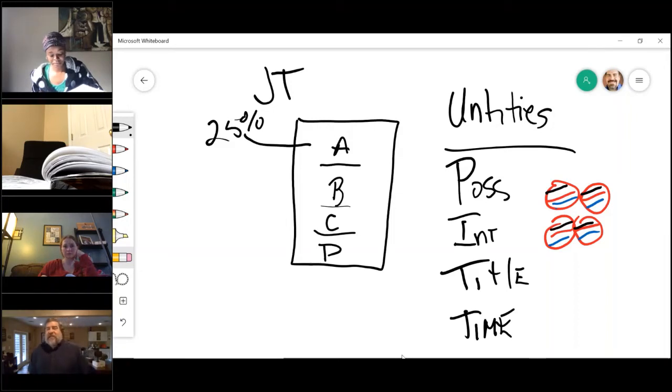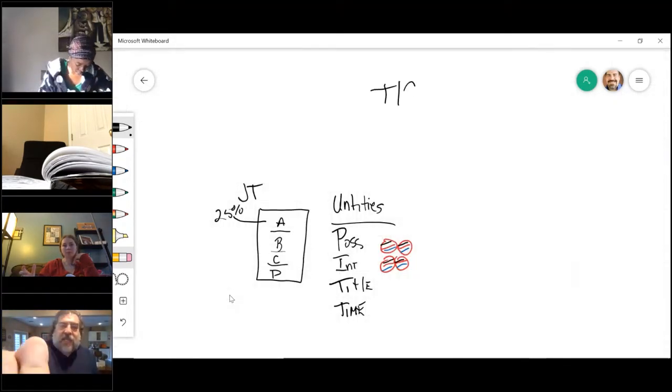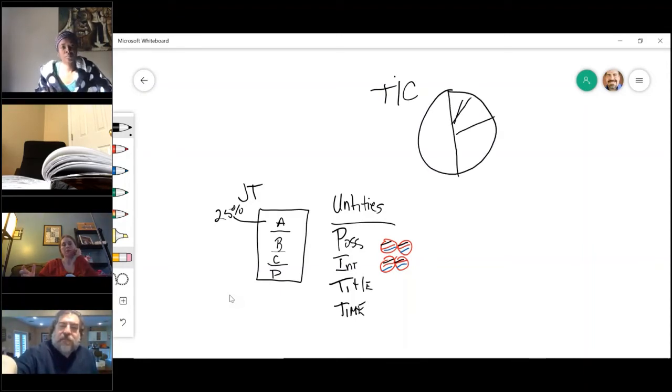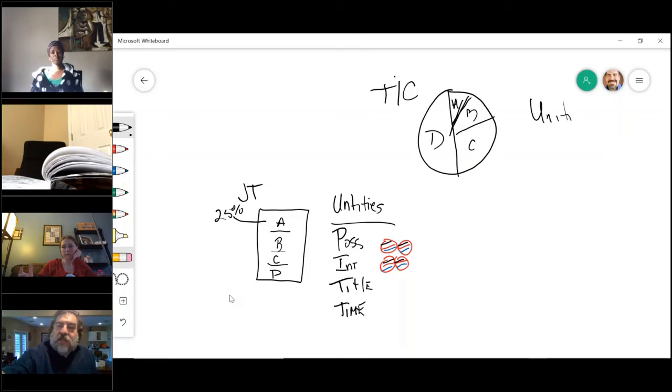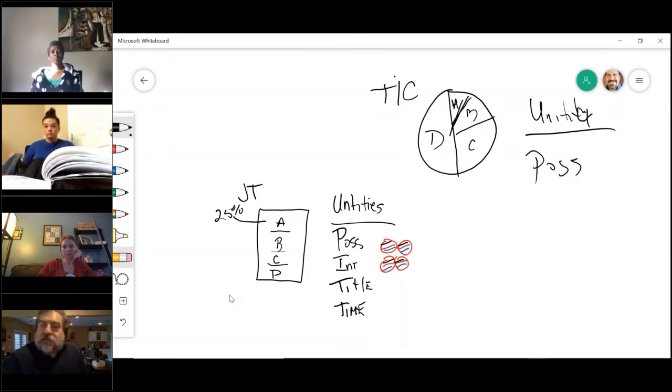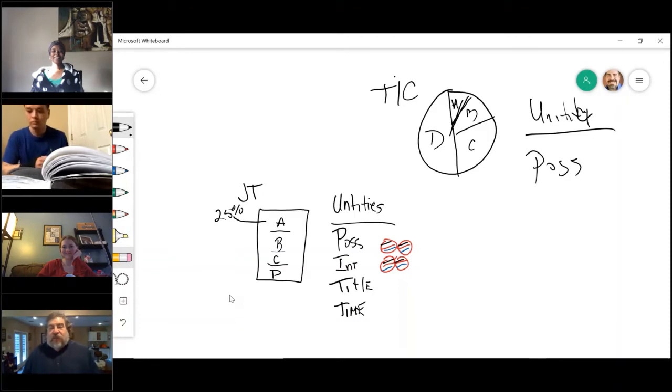So, you will notice that in joint tenancy, we have four unities: possession, interest, time, and title. Now, I found something cool that I could do. In a TIC, remember we drew it like a pie. And we had A, B, C, and D. The only unity they had over here was possession. So, those are the two concurrent methods: tenants in common or joint tenants.